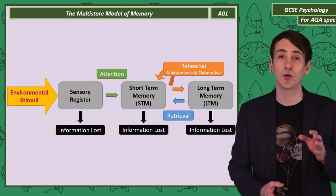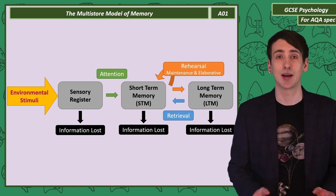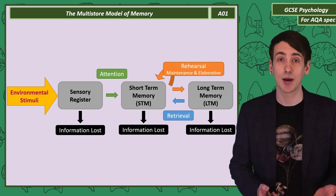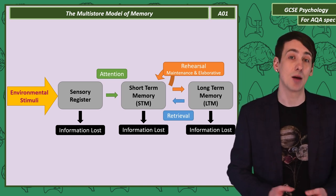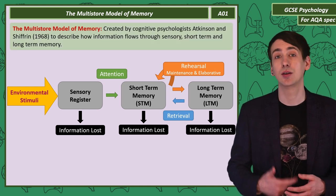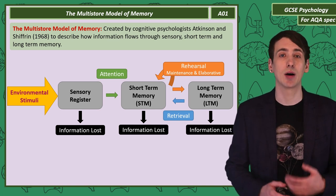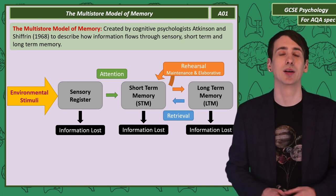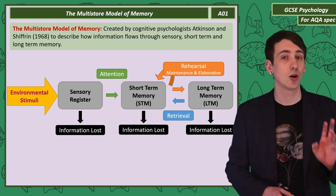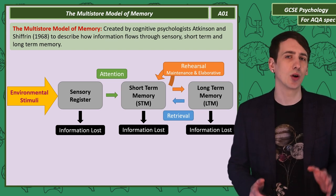This diagram is called the multi-store model. You're going to want to remember this diagram inside and out, so when I finish talking you through it, pause the video and draw it on some scrap paper until you can do it from memory. It was created back in 1968 by Atkinson and Shiffrin, two cognitive psychologists. They used this model to describe how information is processed in your mind. They identified three memory stores: sensory memory, short-term memory, and long-term memory.